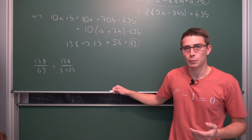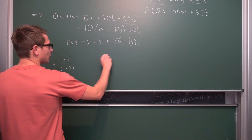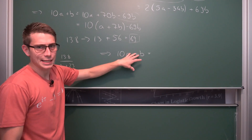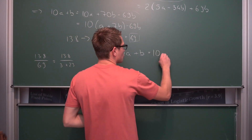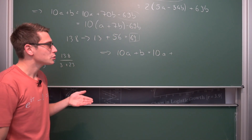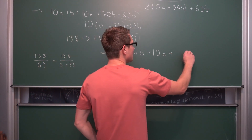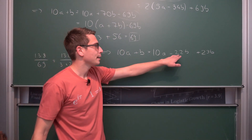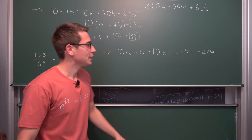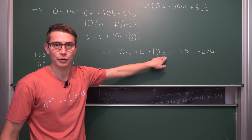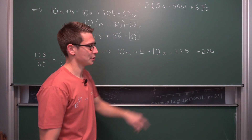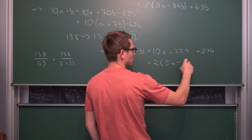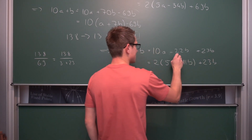Now what about divisibility by 23? We can go the same route as before. Every number is of the form 10A plus B. We can add and subtract something to get a multiple of 23. We can either add 22B giving us 23B, or subtract 23B and add 24B. Factoring out a 2, we get 2 times 5A minus 11B, plus 23B. This is our divisibility rule for 23. For 138: 5 times 13 is 65, and 11 times 8 is 88. 65 minus 88 is negative 23, but the negative sign doesn't matter — our result is divisible by 23, meaning the original number is also divisible by 23.